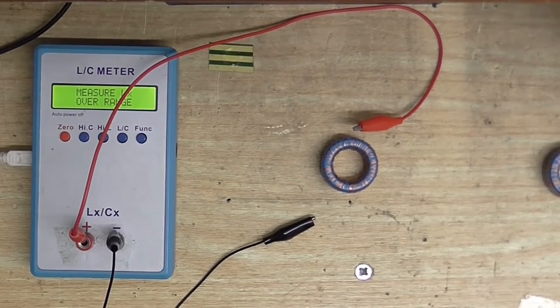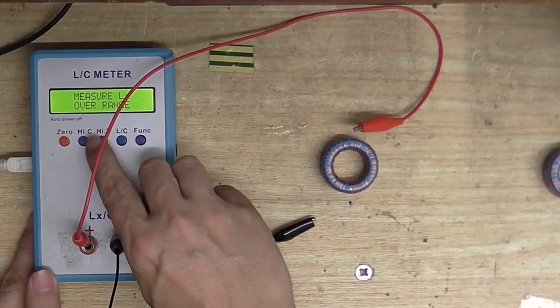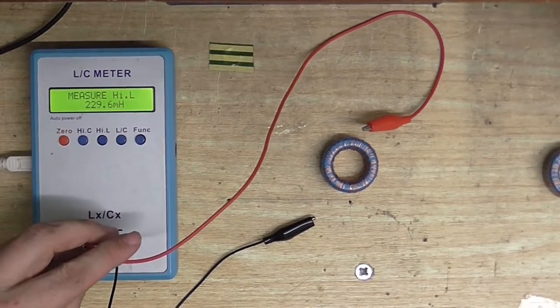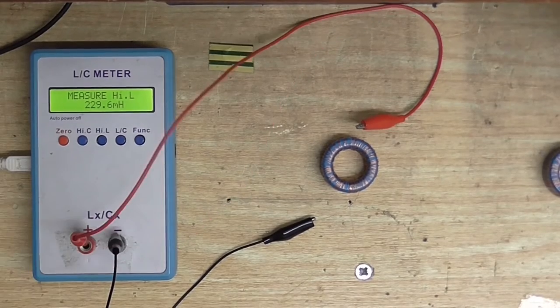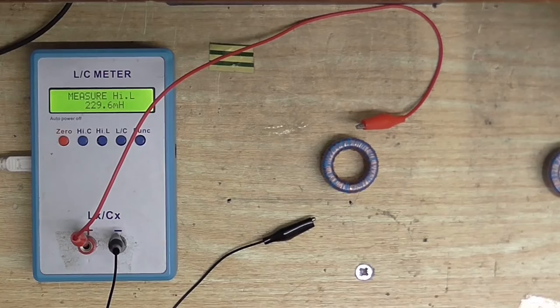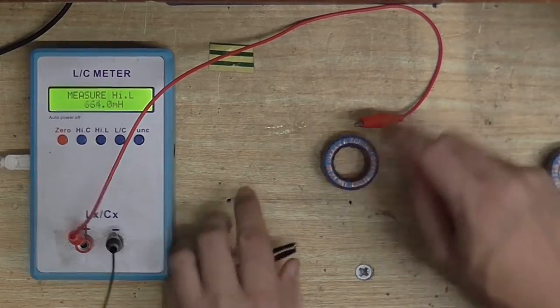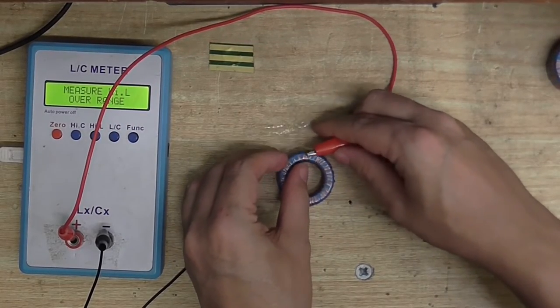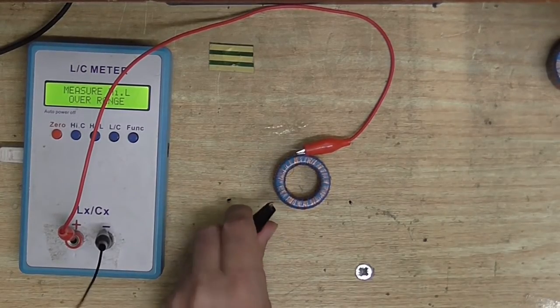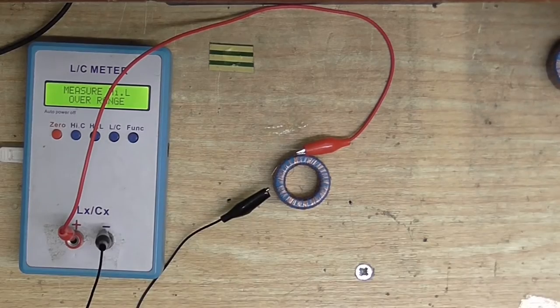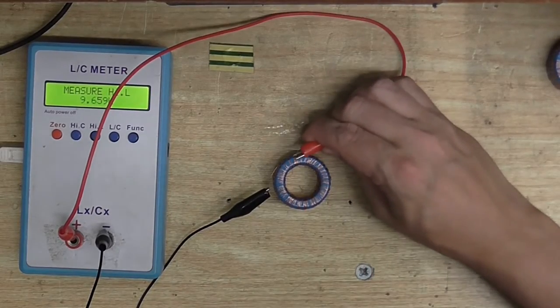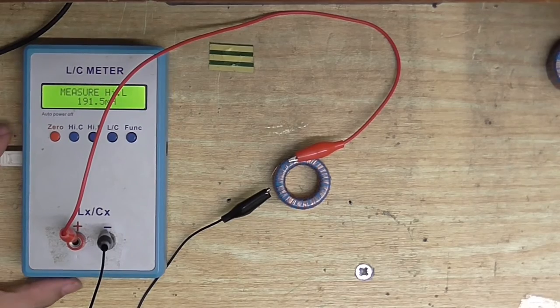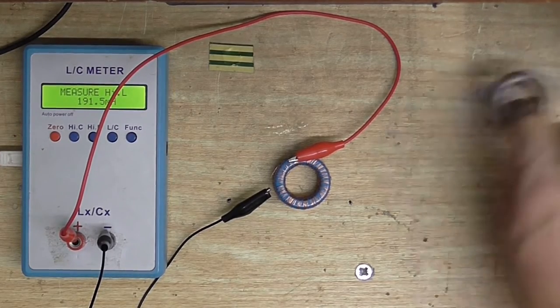Hopefully we've got continuity. Now it still says overrange. Okay, maybe it's a little too high, so let's go to the high inductance. Okay, yeah, there we go. We've got almost 230 mH. So this one's 229.6. Let's see what the other one is. I've already forgotten what the one I just measured was. It was 229, wasn't it? And this one is not making any contact. Okay, this one's 191.5, so we just need to take a few turns off this one.